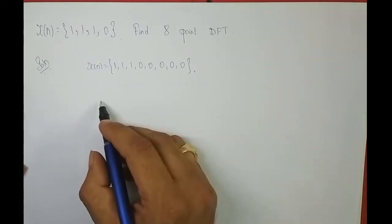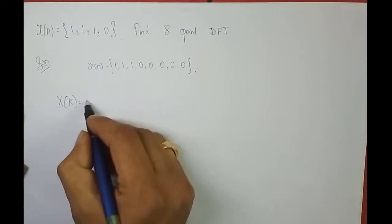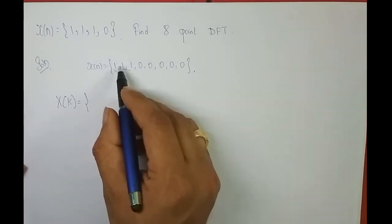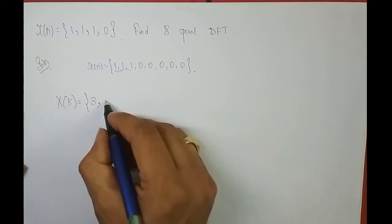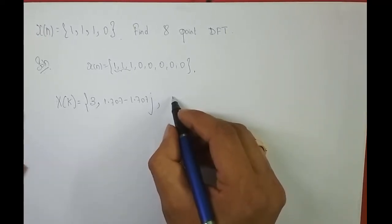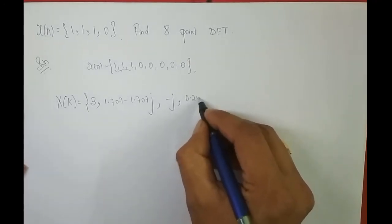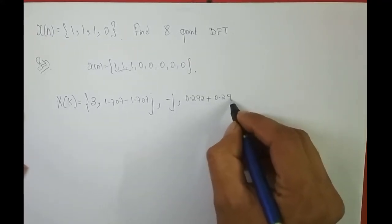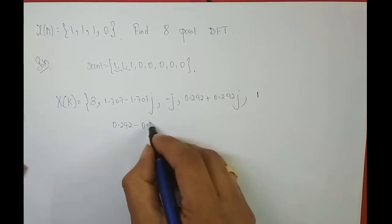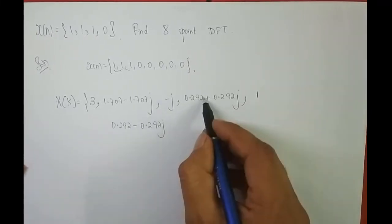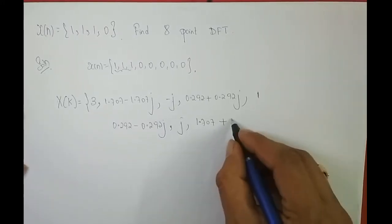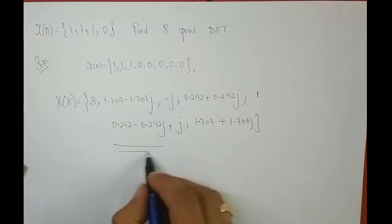Solution: x of n after padding 4 zeros is {1, 1, 1, 0, 0, 0, 0, 0}, so totally the length is 8. I am not going to solve it fully, but I will give you the final X of k. The first sample X[0] is the sum of all time domain samples: 1+1+1 = 3. X[1] = 1.707 − 1.707j, X[2] = −j, X[3] = 0.292 + 0.292j, X[4] = 1, X[5] = 0.292 − 0.292j, X[6] = j, X[7] = 1.707 + 1.707j.